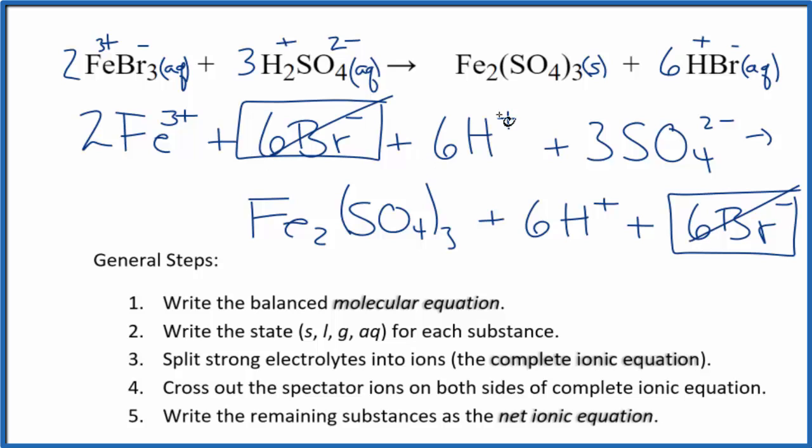I'm going to cross those out. We also have 6 of these hydrogen ions in the reactants and in the products, spectator ions. Cross those out. What's left? That's our net ionic equation for FeBr3 plus H2SO4.